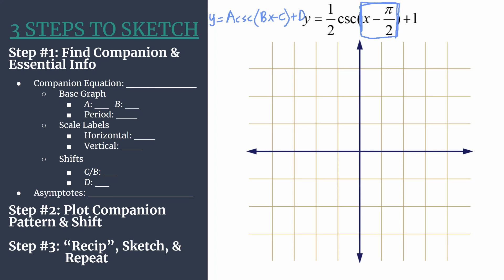Let's write our companion equation — we're building off a sine function. All you do is replace cosecant with sine: y equals one half sine of x minus pi over two, plus one. We'll analyze this for our base graph to get the companion pattern. The value a is the leading coefficient right in front of the function sine, which is one half. That'll help us set the max and min for the companion pattern.